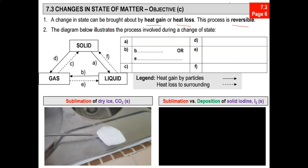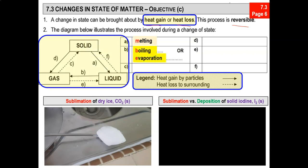So let's proceed on to the next three processes. Let's look at melting first. The melting process means the substance at the solid state gets converted to the liquid state. This is represented by a solid line. If you look at the legend, it means the particles in a solid gain heat.